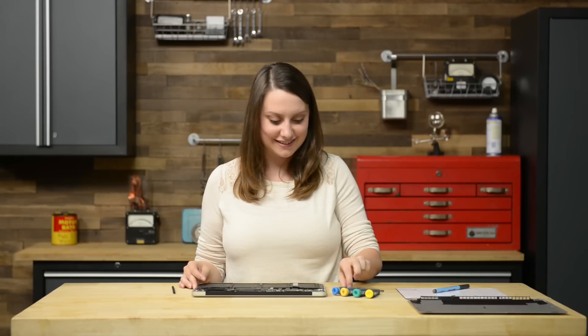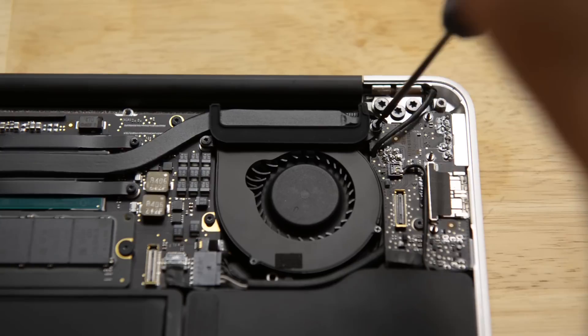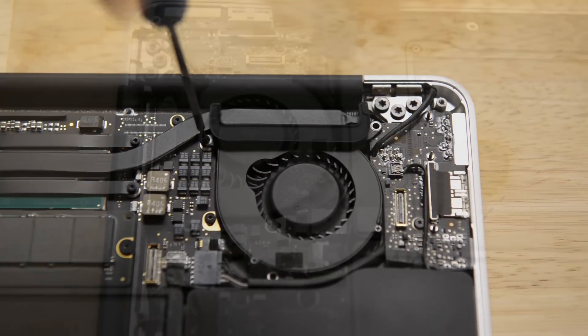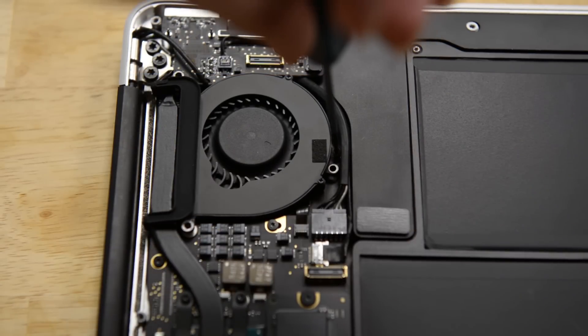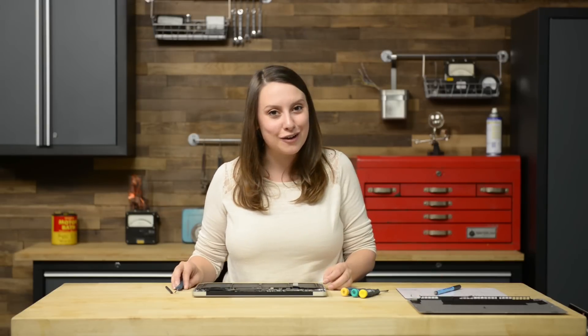Now there's only three things standing in our way from removing the fan. Three different sized T5 screws. Make sure you make note of which screw came from which hole so you can get them back in the right place. Once they are removed, you can take the fan out of the air. Removing the fan will also disconnect the fan ribbon cable so just be careful not to snag it.